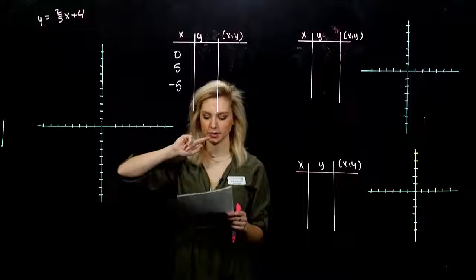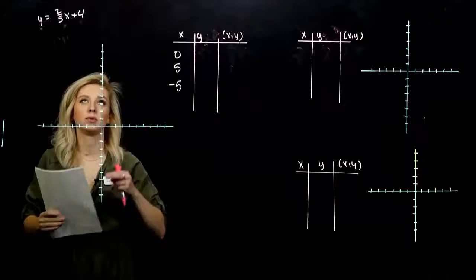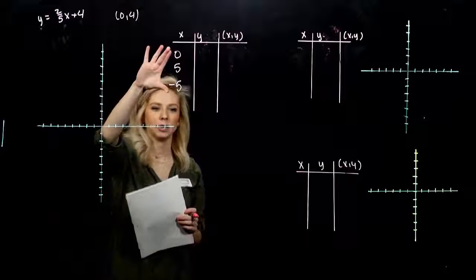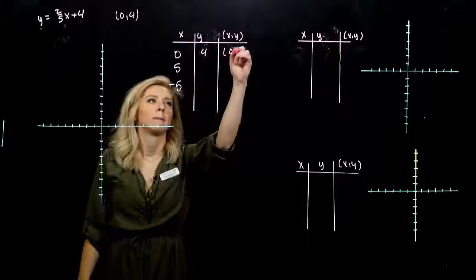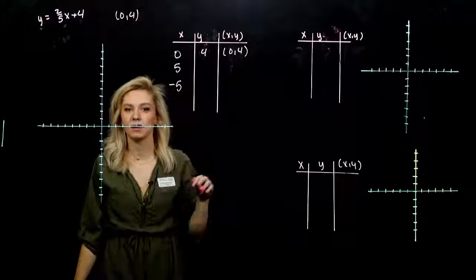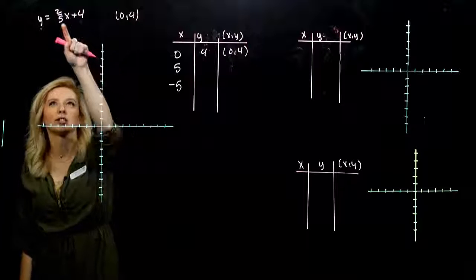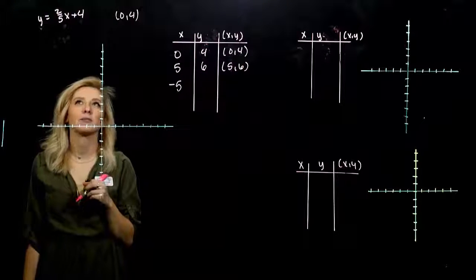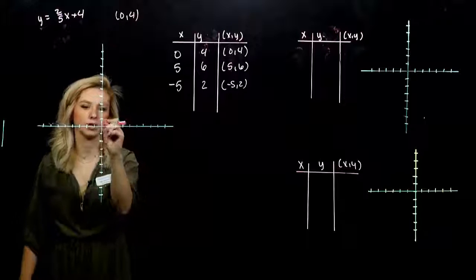We're going to use that fact now as we graph more equations. If the equation is in y equals mx plus b form with y by itself, I automatically know one point where it crosses the y-axis. In this case, I know one of the points is (0, 4). To confirm, I'll plug in three points. When I plug in 0, this term disappears and we're left with 4 — yes, it goes through (0, 4).